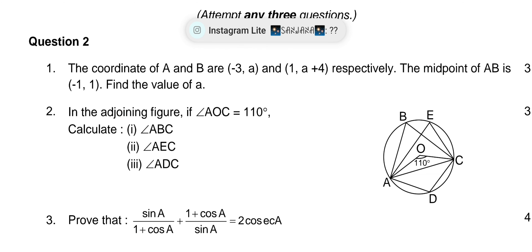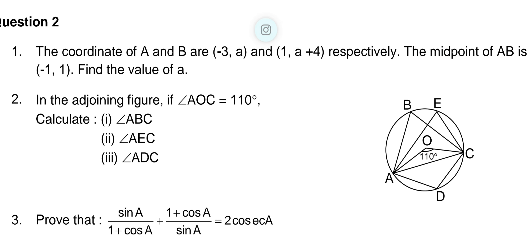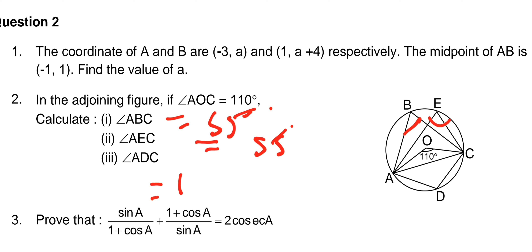Question number 2 (circle): if the central angle EOC is 110°, then the inscribed angle ABC is half the central angle, which is 55°. Since AEC and ABC are inscribed in the same arc, AEC is also 55°. Since ABCD is a cyclic quadrilateral, ADC = 180° - 55° = 125°.